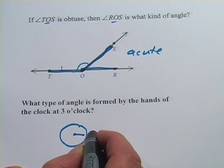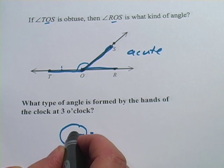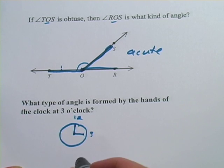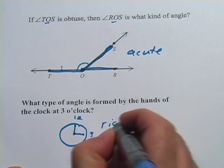this hand is pointing towards the 3, which is right there. The other hand is pointing towards the 12, which is right there. And that is a 90 degree angle. So this is a right angle.